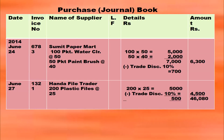Considering all the previous transactions, the purchases book will have a total of 46,080. In the name of the supplier column write 'purchases account', and in the date column write the last day of that particular month, June 30th. Purchases account 46,080.